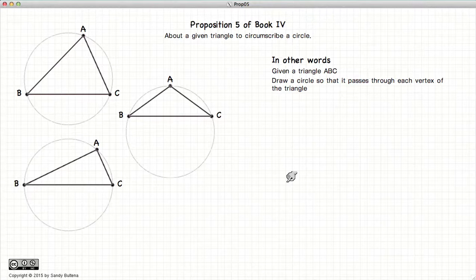In this proposition we are going to learn how to construct a circle around a triangle such that the circle passes through each of the vertices of the triangle.